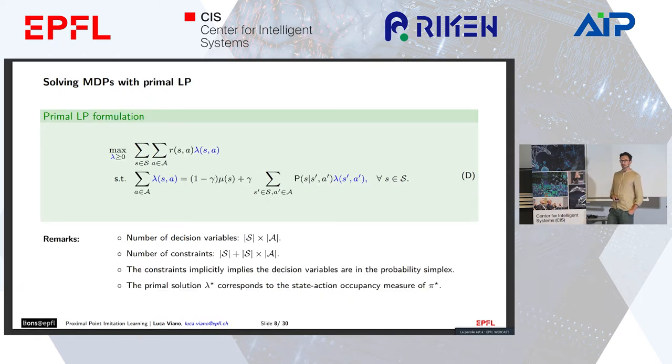An alternative program is the dual of the previous slide, which we refer to as the primal. The decision variable is now an object called occupancy measure, with a linear objective that's the inner product between lambda and the reward function R. The constraints impose that lambda is a probability distribution over the state action space induced by a policy acting in the MDP.